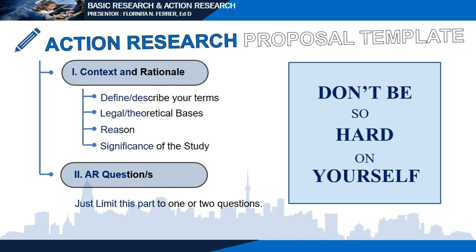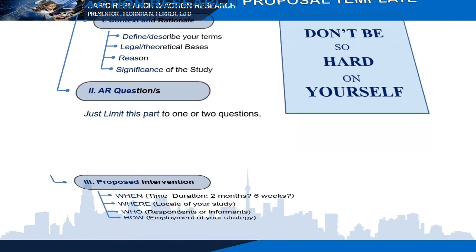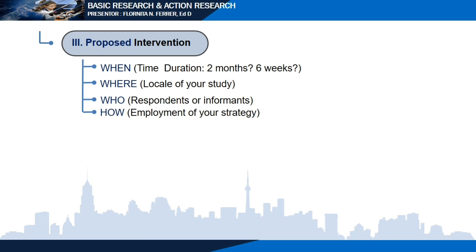Then we have the action research questions. As a rule of thumb, just limit this to one or two questions — do not be too hard on yourself. Next is your proposed interventionary strategy: the time duration — one month, two months, one year — depending on your problem. Then the locale of your study — where are you going to conduct your research? Next, identify who are your respondents or informants, who shall answer your questions, and how you are going to employ your strategy.